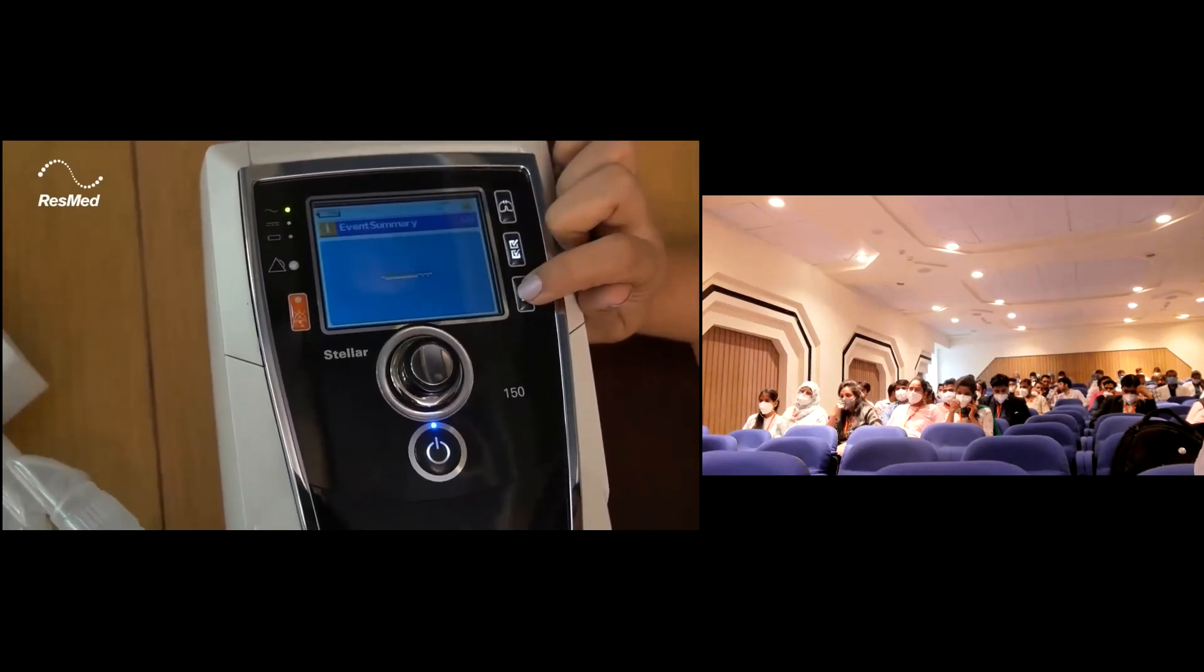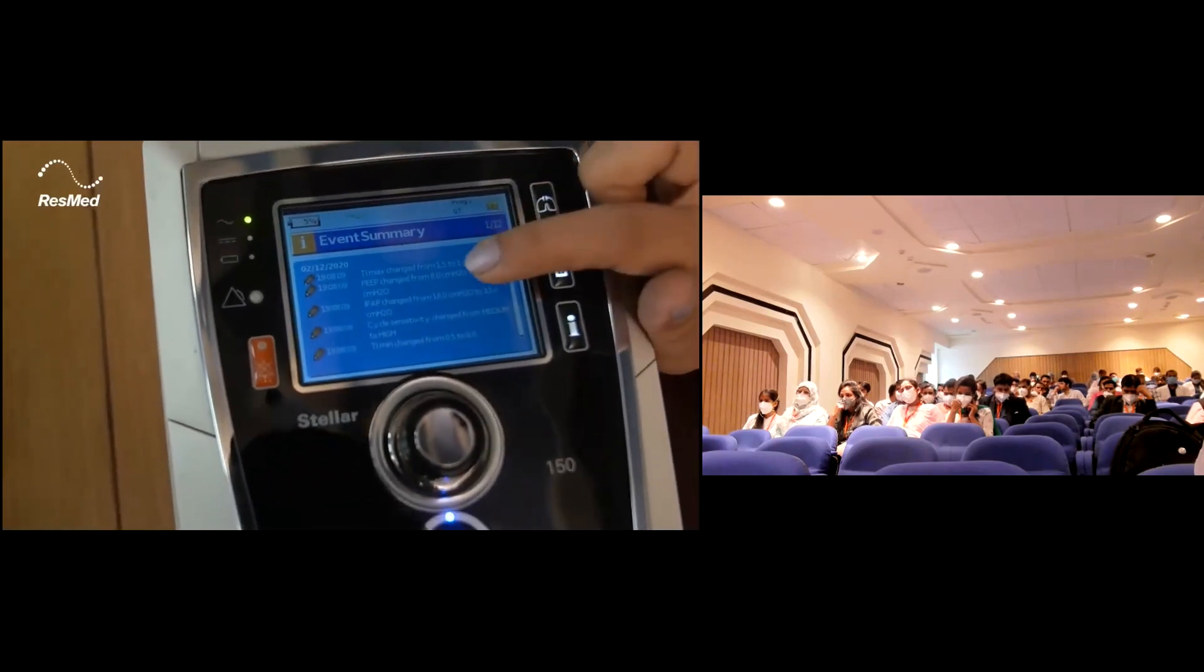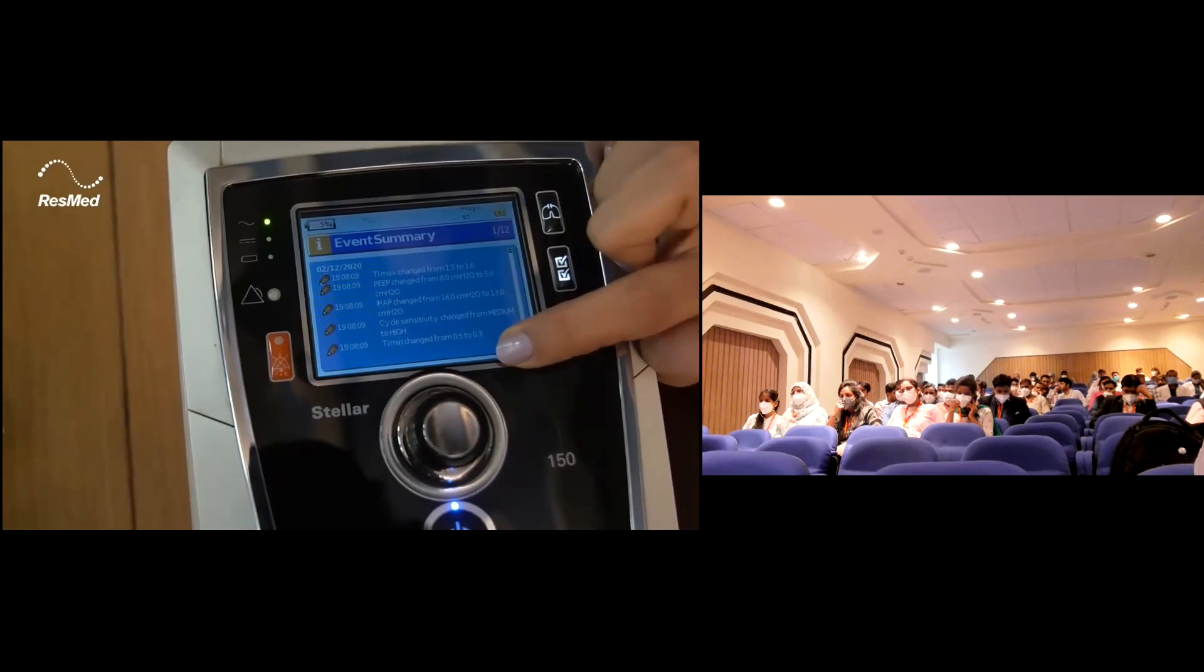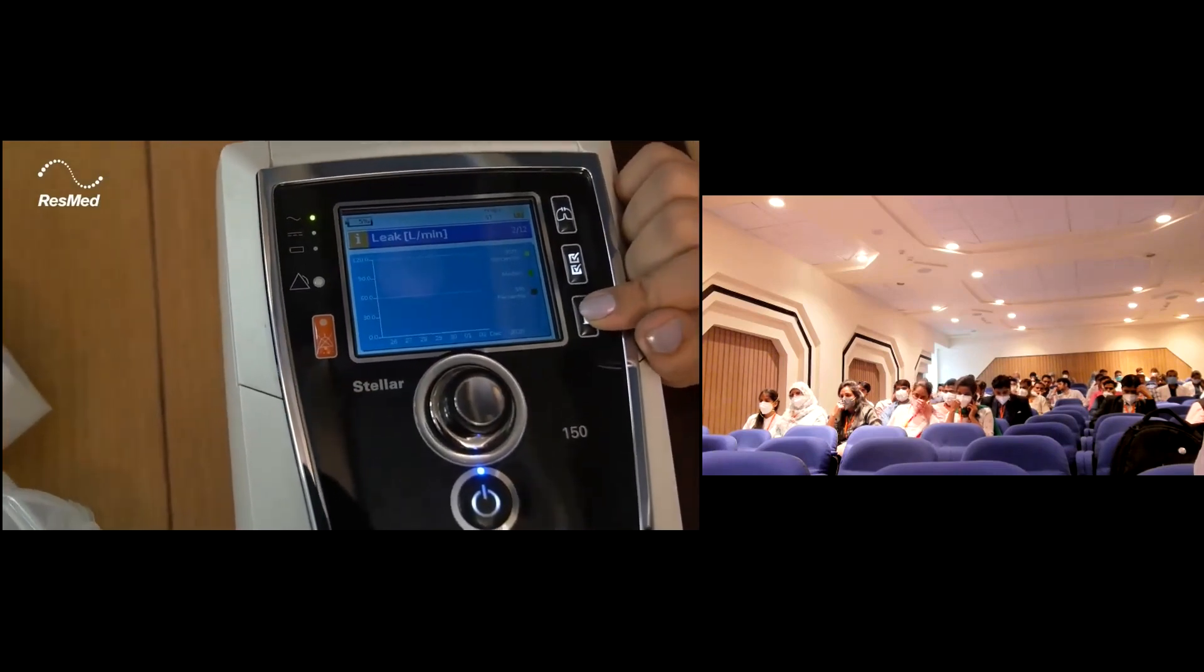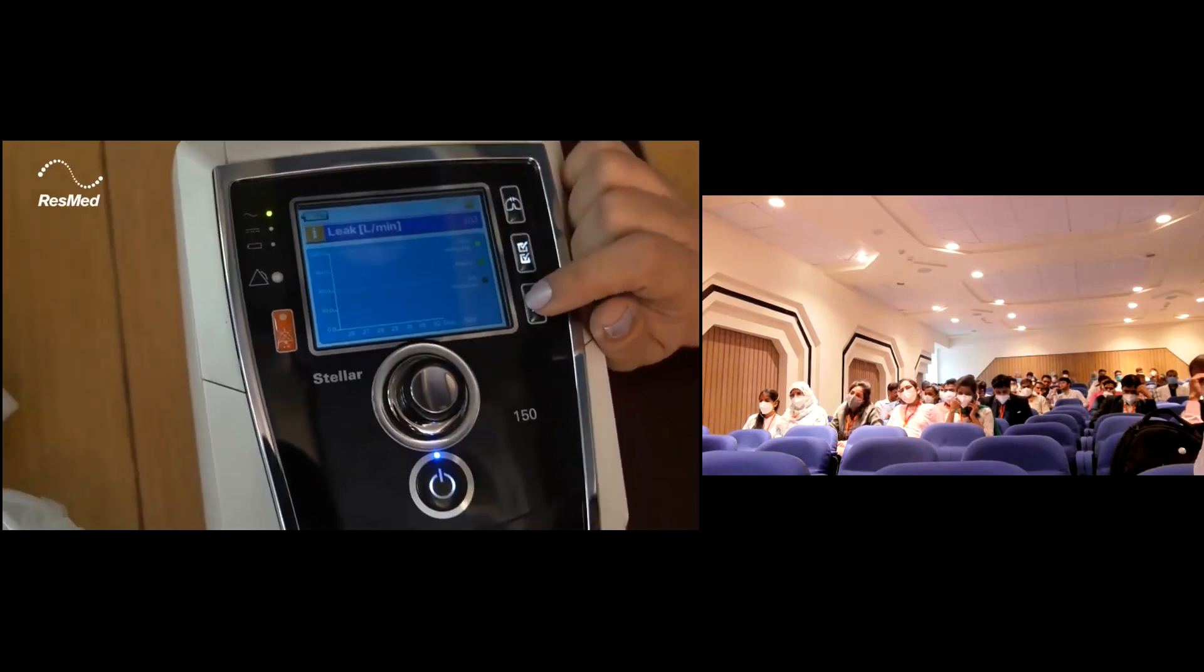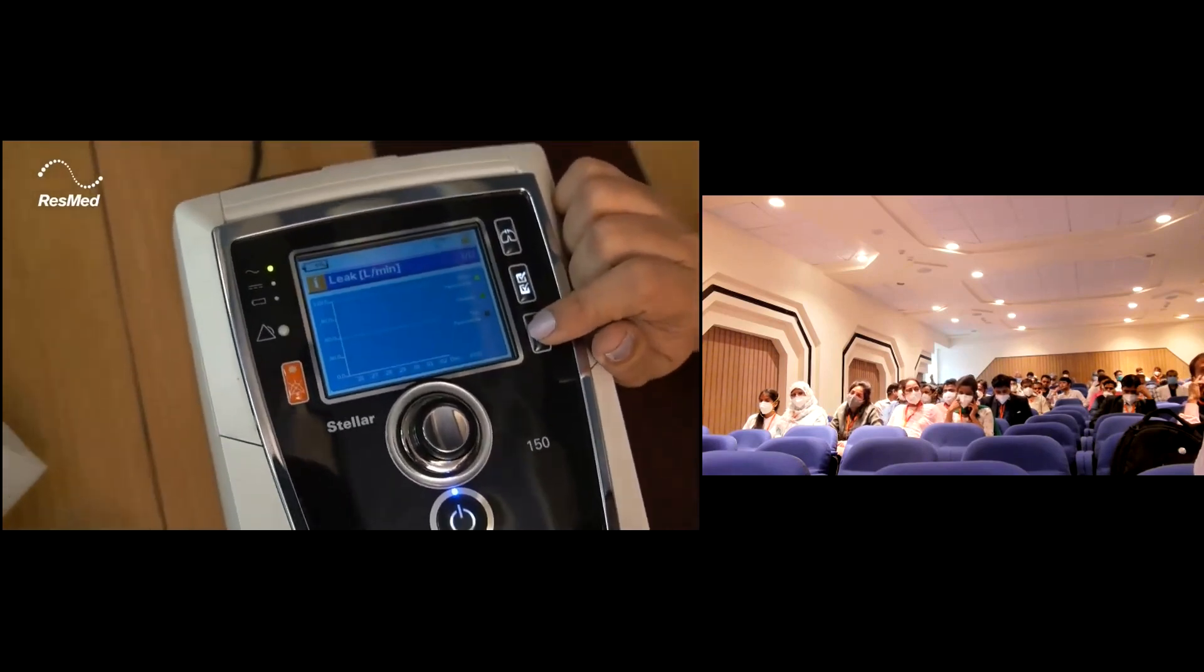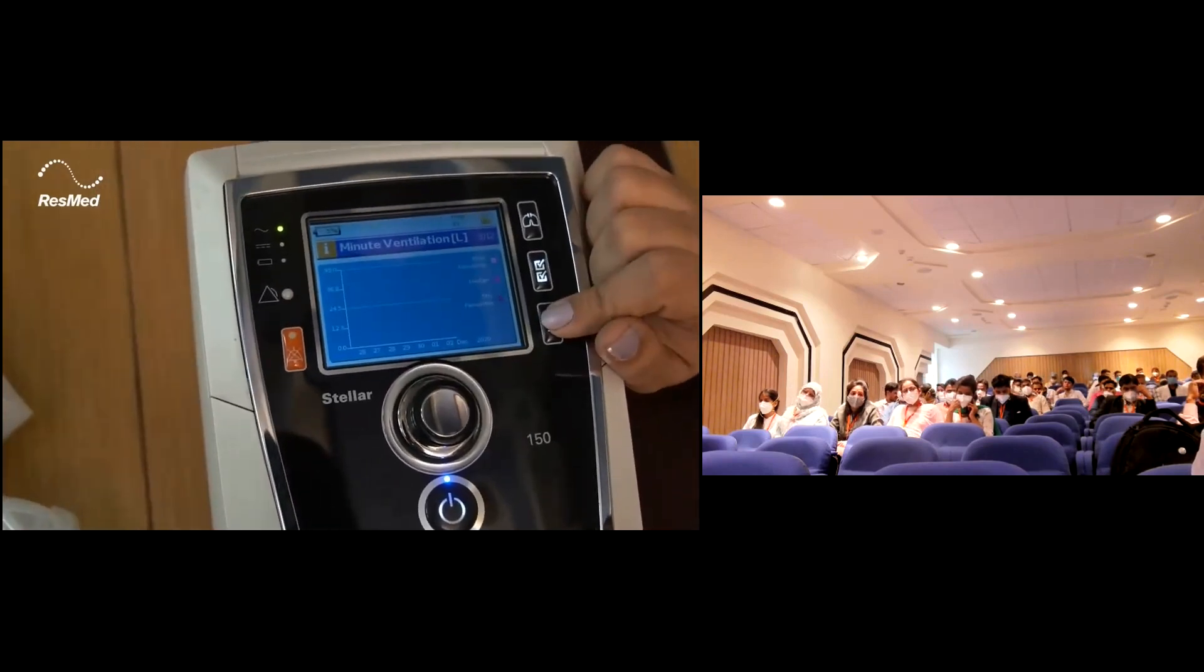Coming to the information menu, you have the event summary. You have 12 pages over here. These are all the events that have happened with the device. When you click again, you go to the next page. You can see what is the leak that the patient had over the last one week.